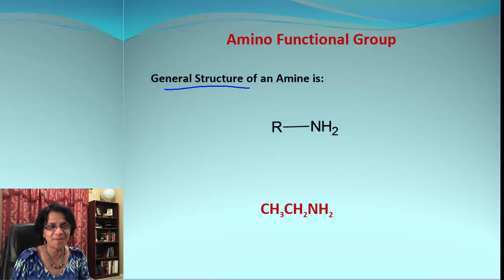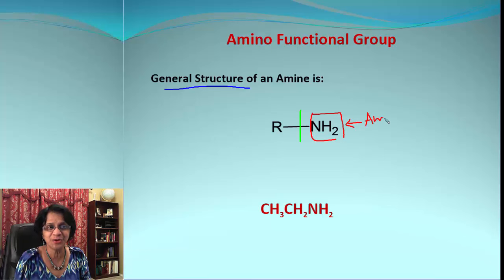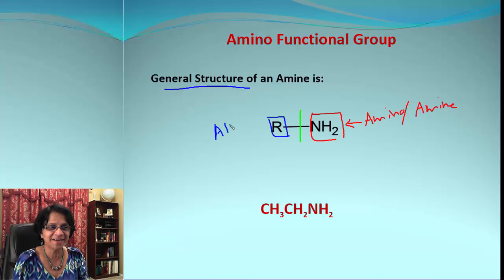We are getting a general formula: R-NH2. I'm going to split the compound into two parts. What you have here, NH2, is the amino group or amine group. R is an alkyl group or an aryl group.